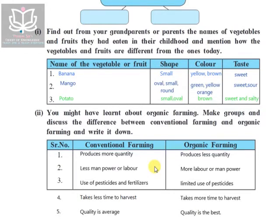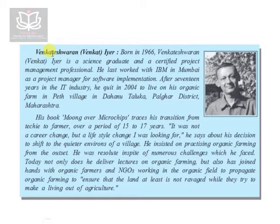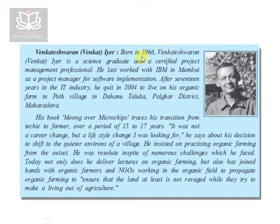Now we shall see a little information about the author and then begin with the explanation of the chapter. This lesson is specifically about agriculture — it is somewhere related to the roots of man. The author of this chapter is Venkateshwaran, born in 1966. He is a science graduate and a certified project management professional.